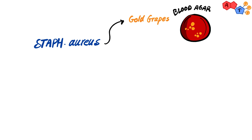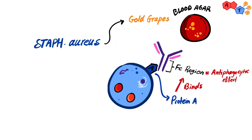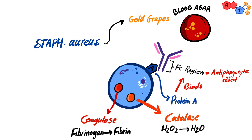For the features of staph aureus, the most important protein is protein A. This protein binds the FC region of the IgG, exerting an antiphagocytic effect. It also has both catalase enzyme, which converts hydrogen peroxide to water, and coagulase enzyme, which converts fibrinogen to fibrin. In addition, it has DNase enzyme, which breaks down DNA.